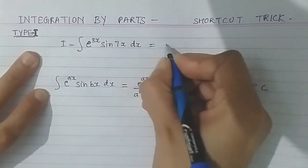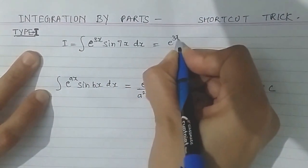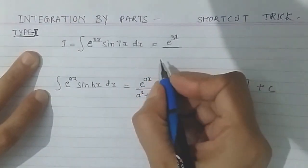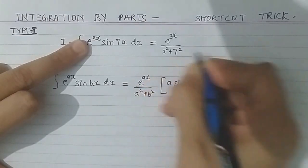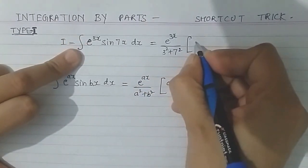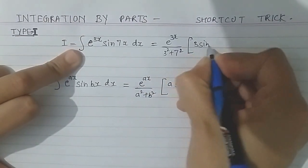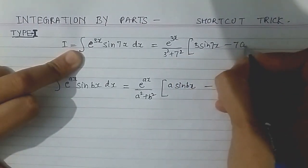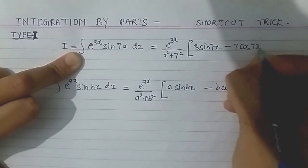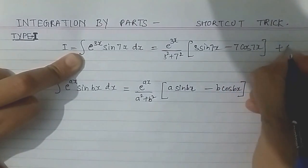So for this particular question, this integral will equal to e raised to the power 3x as it is. Here I will be writing a squared plus b squared, so 3 squared plus 7 squared. 3 sine 7x minus 7 cos 7x plus c.